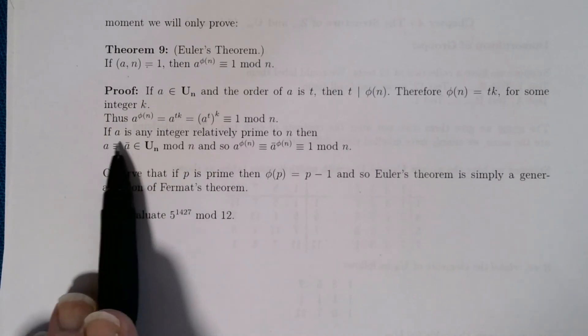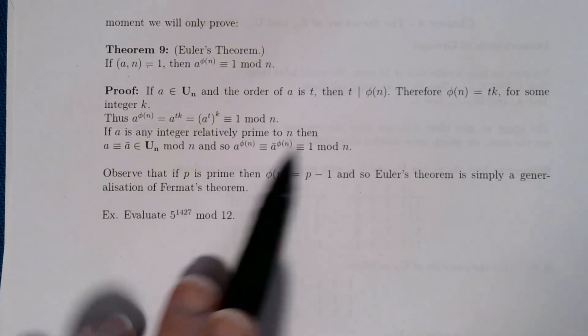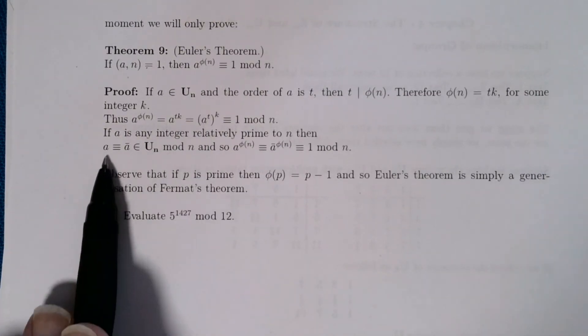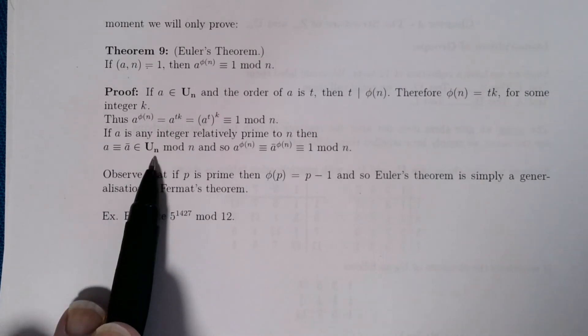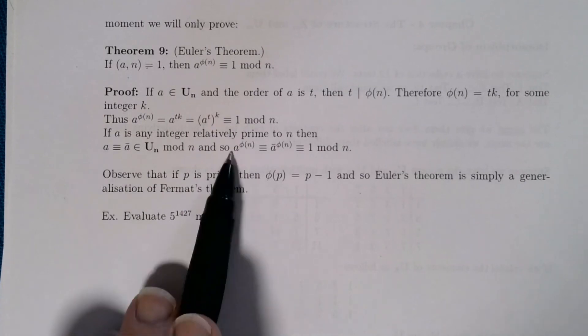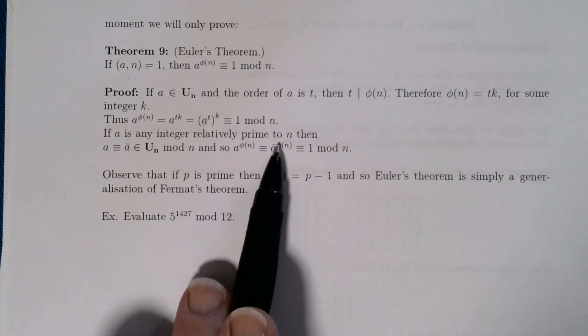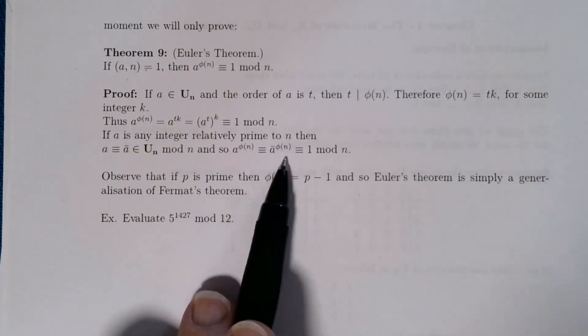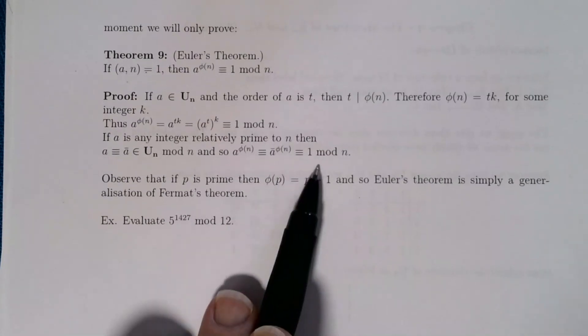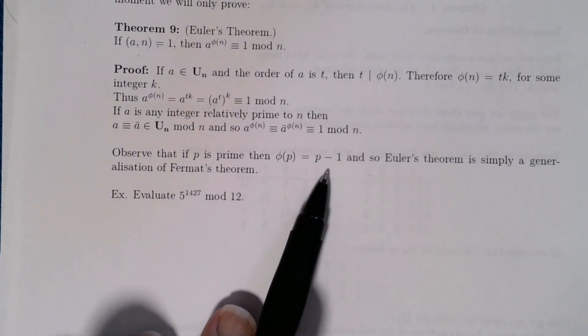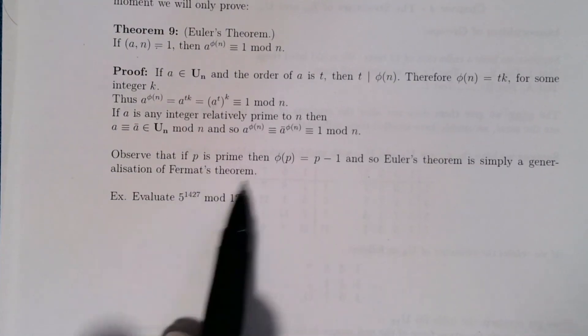So if a is any integer relatively prime to n, this worked for a in U_n, and now I want to show it's true for any integer. You take any integer relatively prime to n, you read it modulo n, that will give you an element a bar that's in U_n. And if I raise a^φ(n) is congruent to a bar^φ(n), and a bar now is in U_n, so this is 1 by what we did above. So as I mentioned, observe that if p is prime, then φ(p) is p-1. So Euler's theorem is simply a generalization of Fermat's theorem.